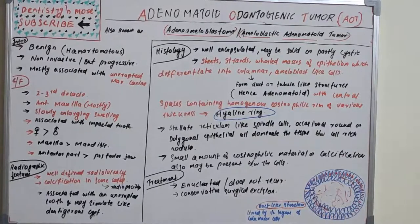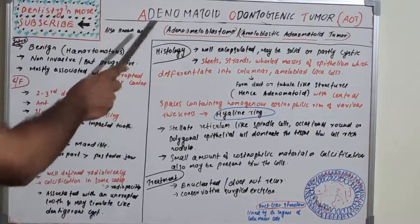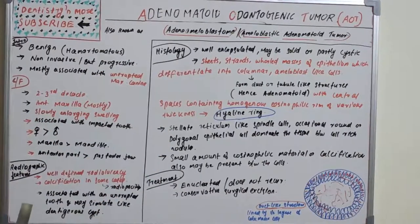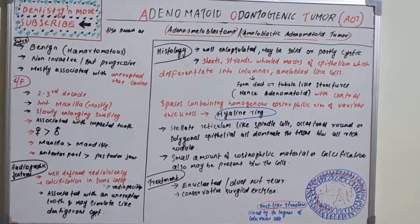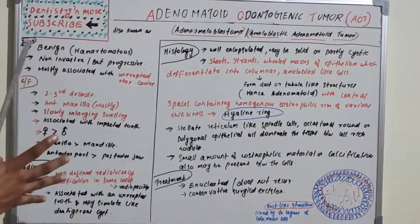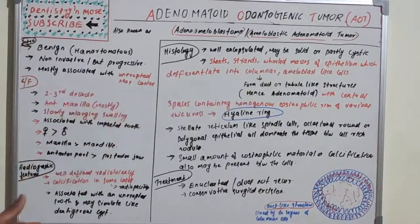Moving on to histology — the most important part — AOT shows adenomatoid structures. It is a well-encapsulated solid or partly cystic lesion. On histology it shows sheets, strands, and whole masses of epithelium that differentiate into columnar ameloblast-like cells.